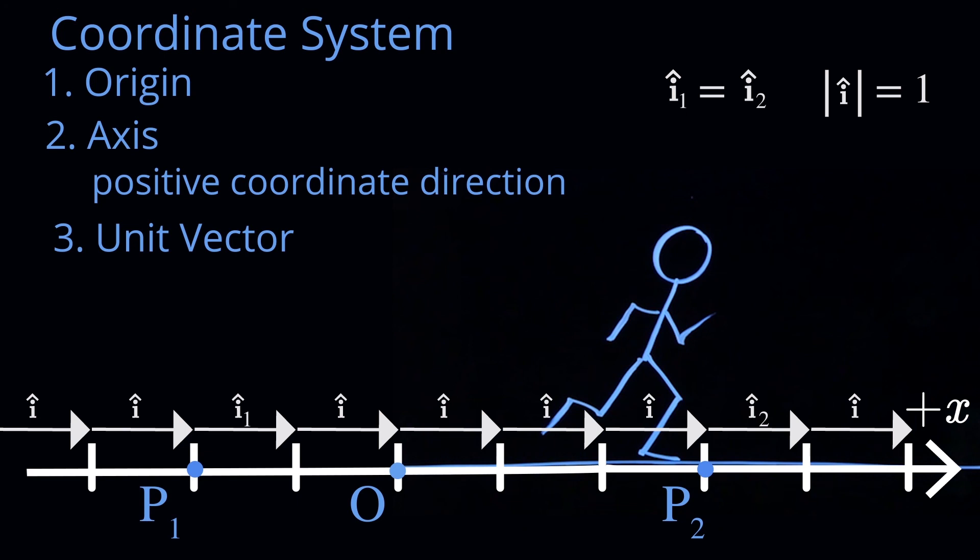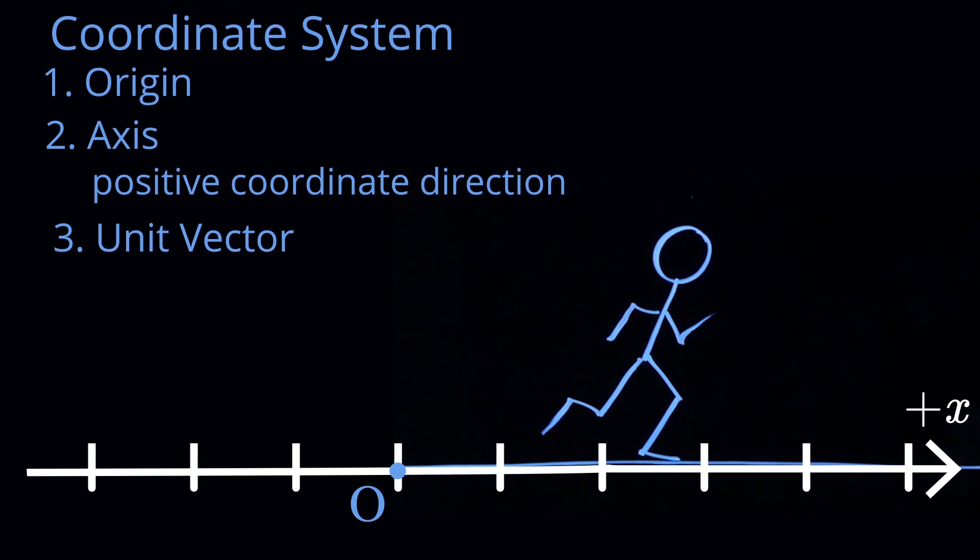So symbolically, we may draw a picture and indicate our unit vector in the positive x direction. And this is our coordinate system. And we can next begin to describe the position and the velocity of our object as it's moving along this x direction.